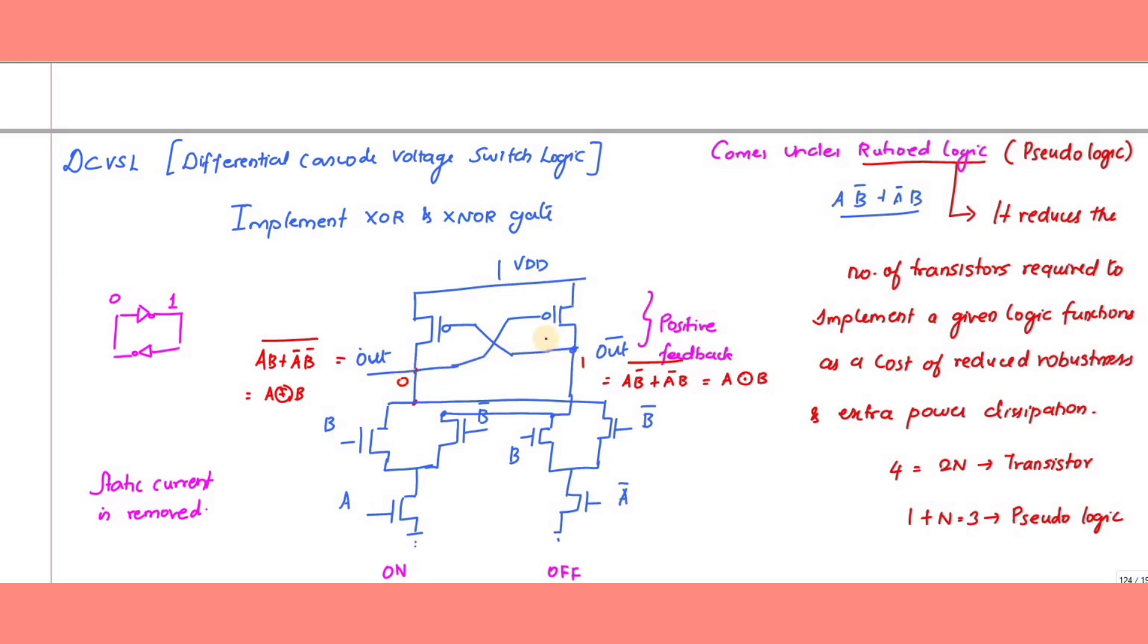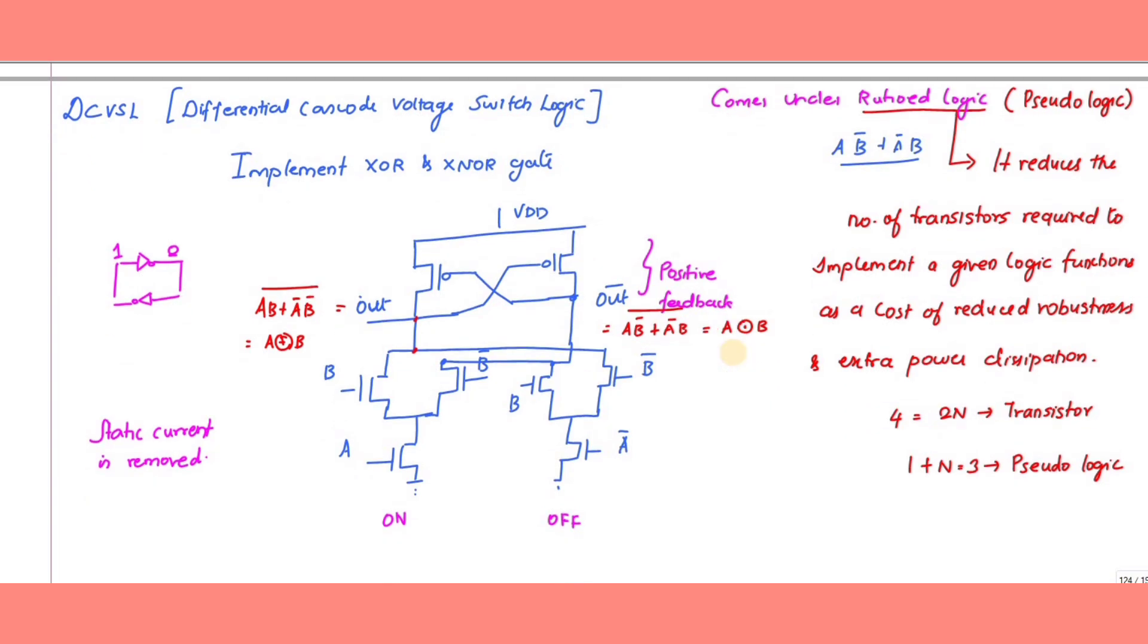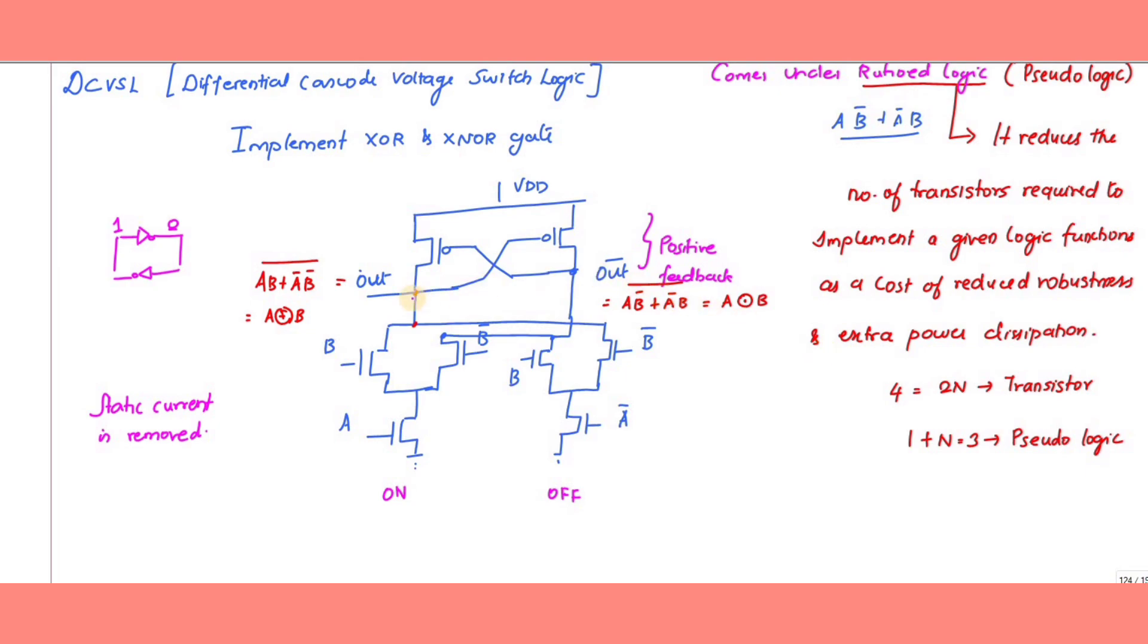If one output is high, that transistor is off, holding the state. The positive feedback maintains the differential outputs. When one side is high and the other is low, they reinforce each other through cross-coupled transistors, keeping the state stable. By using this differential cascade voltage switch logic, we can eliminate static current.